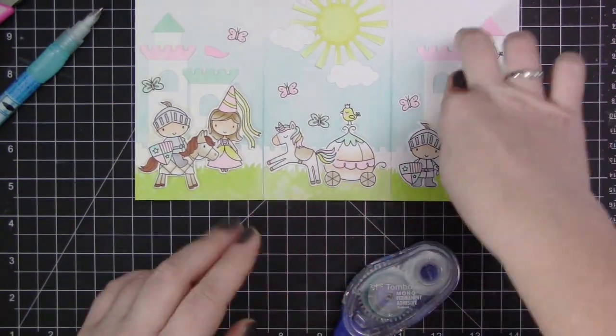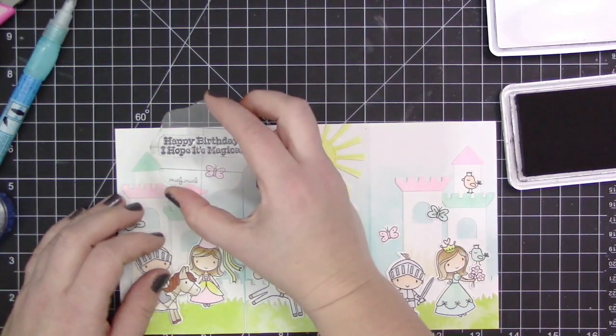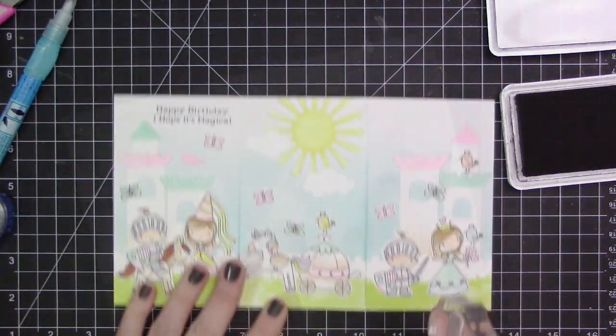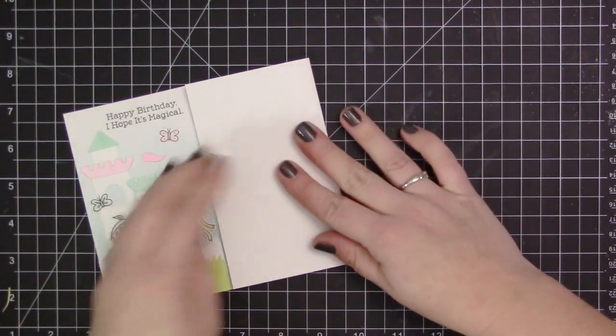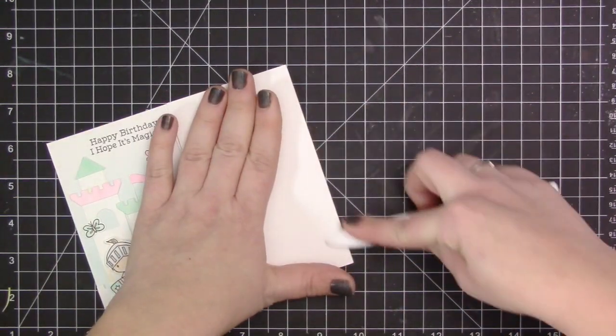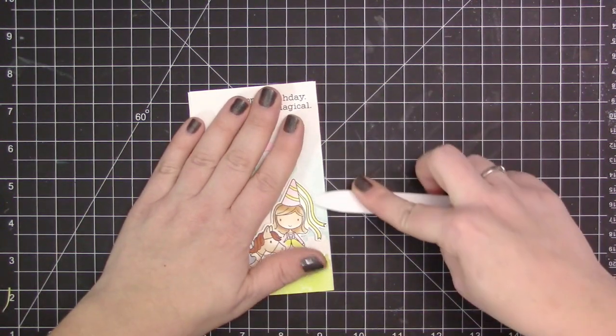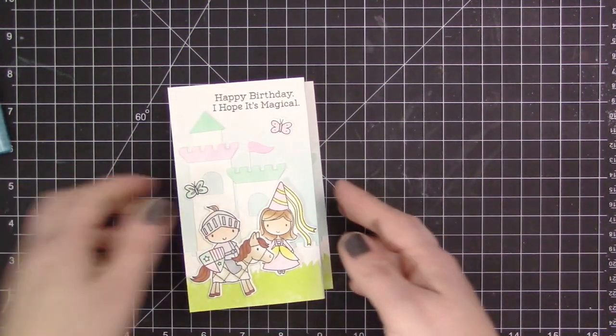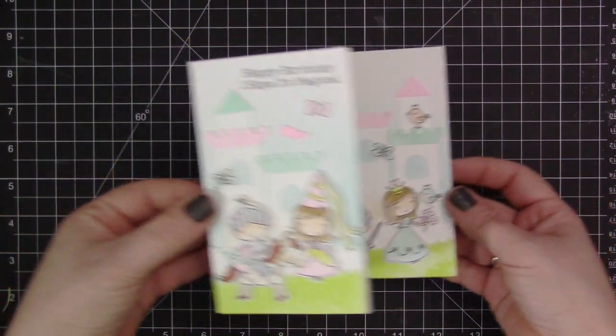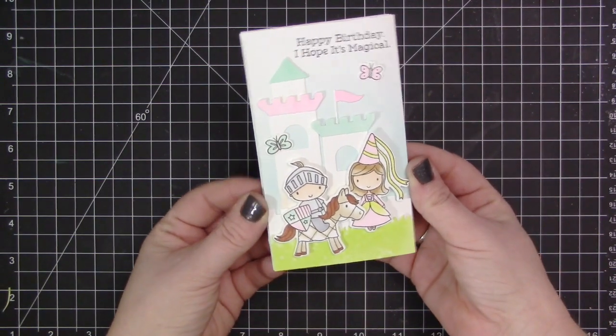That is going to complete the card. Like I mentioned, it's a little bit incorrect for sizing but it does work out. I did have to modify my sentiment. I only used one sentiment on the very front and I had to use the smallest sentiment in the set so that I could fit it in the area that I had. Once I have that done, I'm just going to use my bone folder and refold everything and really press down on those edges just because we've added a lot to the card. I'm left with this great tri-fold card that's a little bit skinnier than we were supposed to have but still works out in the end.